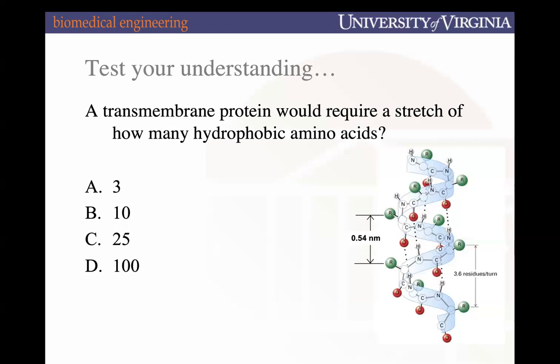The answer is approximately 25 consecutive hydrophobic amino acids. If each turn is about 0.5 nanometers wide and the cell membrane is 4 nanometers thick, you need about 8 turns. Each turn has 3.6 amino acids, so 3.6 times 8 is roughly 25. Knowing that the cell membrane is 4 nanometers thick, with 0.5 nanometers per turn, you need approximately 8 turns of your alpha helix — and with 3.6 amino acids per turn, you need about 25.